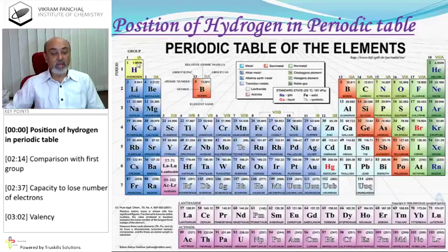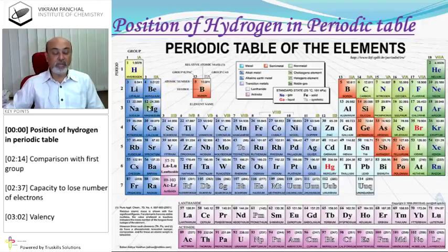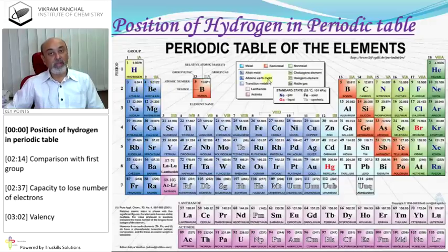Similarly, when an element belongs to the first group, it can show plus one valency. When an element belongs to the second group, it shows plus two valency. Elements are classified according to their valency and electronic configuration.